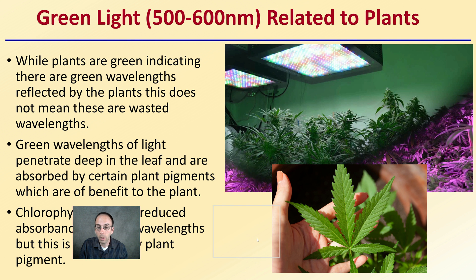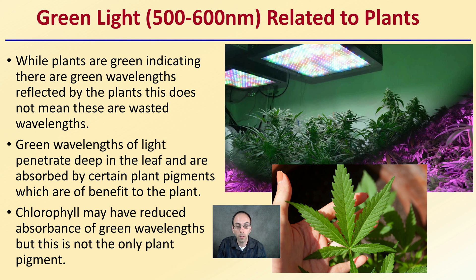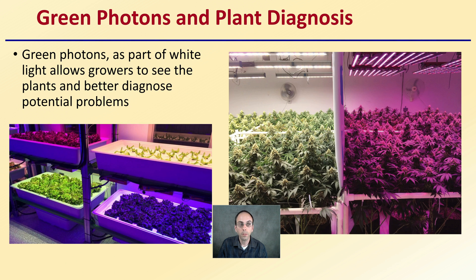While plants are green — indicating that green wavelengths are reflected — this does not mean these are wasted wavelengths. Green wavelengths of light penetrate deep into the leaf and are absorbed by certain plant pigments, which benefit the plant. Chlorophyll may have reduced absorbance of green wavelengths, but chlorophyll is not the only plant pigment. There are other plant compounds beyond just chlorophyll, as seen in deciduous trees that change color in fall as chlorophyll is degraded and those other pigments are expressed.